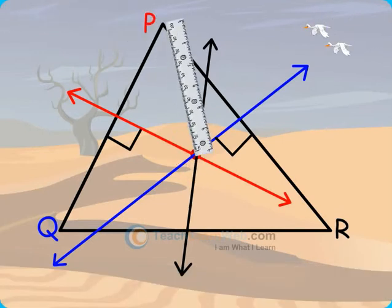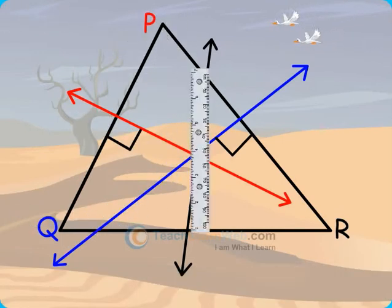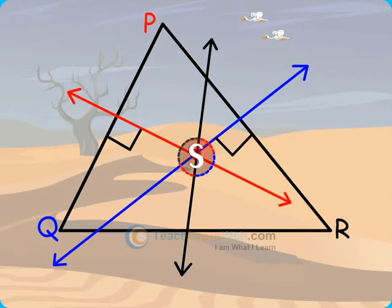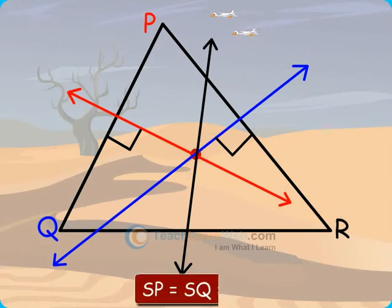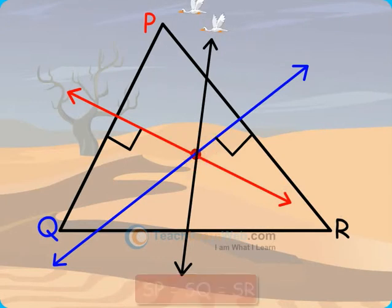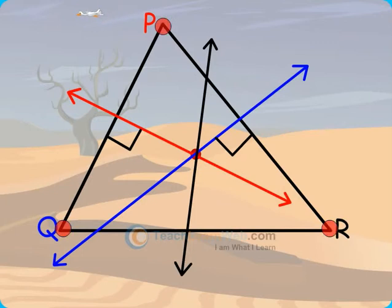Now measure the distance of S from P, Q, R. You will find that SP equals SQ which equals SR, or we can state that the point of concurrence of perpendicular bisectors of the sides of a triangle is equidistant from the vertices of a triangle.